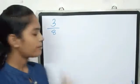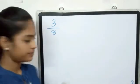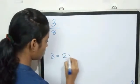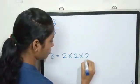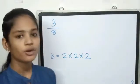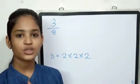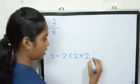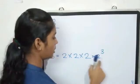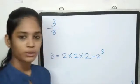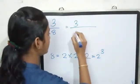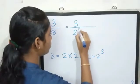We get to know that 3 by 8. 8 is how many times do we get? 2 into 2 into 2. 2 into 2 is 4. 4 into 2 is 8. Then we get 2 into 2 into 2. How many times do we get? 2 cubed.